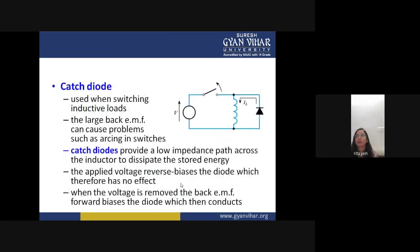A catch diode is used when switching into inductive loads, where the large back-EMF can cause problems such as arcing in switches. Catch diodes provide a low-impedance path across the inductor to dissipate stored energy. The applied voltage reverse-biases the diode so it has no effect during normal operation; when the voltage is removed, the back-EMF forward-biases the diode which then conducts.